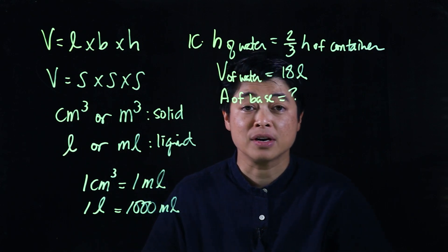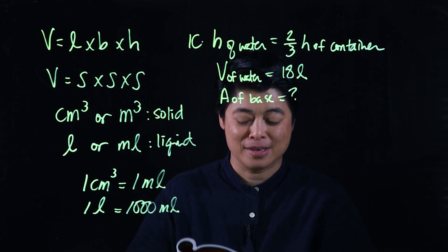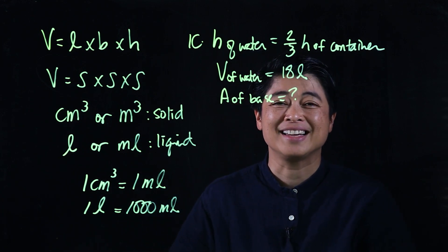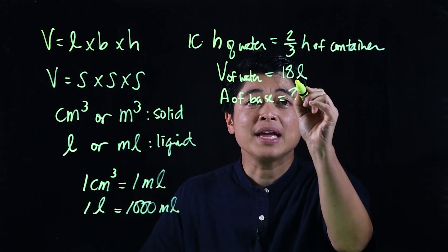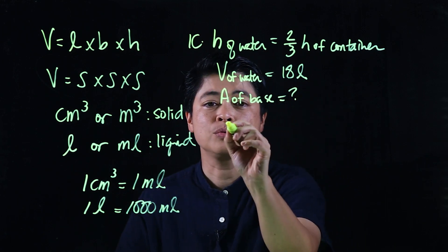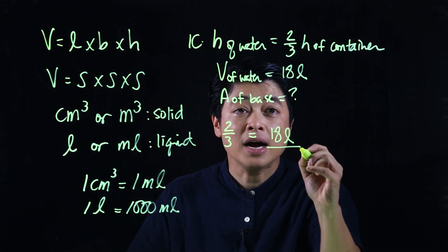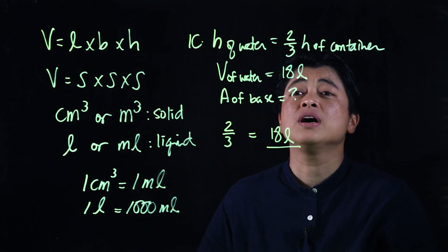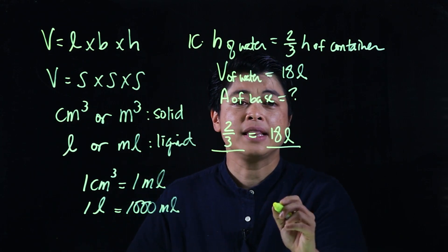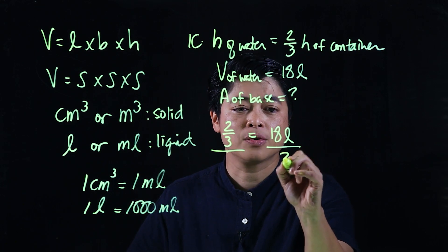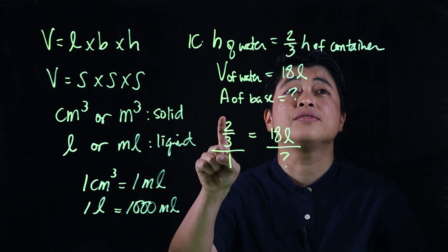I'll use my method rather than the book's method to reduce confusion. We know that two-thirds of the volume equals 18 liters. We want the volume of the whole container — that's the unknown. This 18 liters is only two-thirds of the height of the container; we want the full height, which is 100 percent.